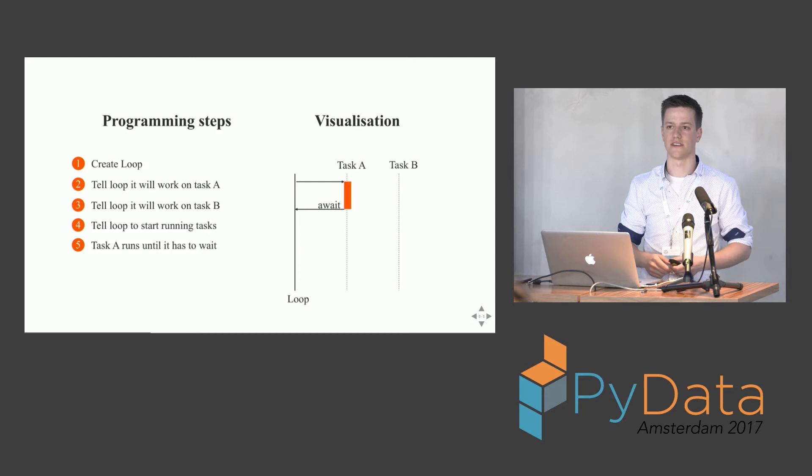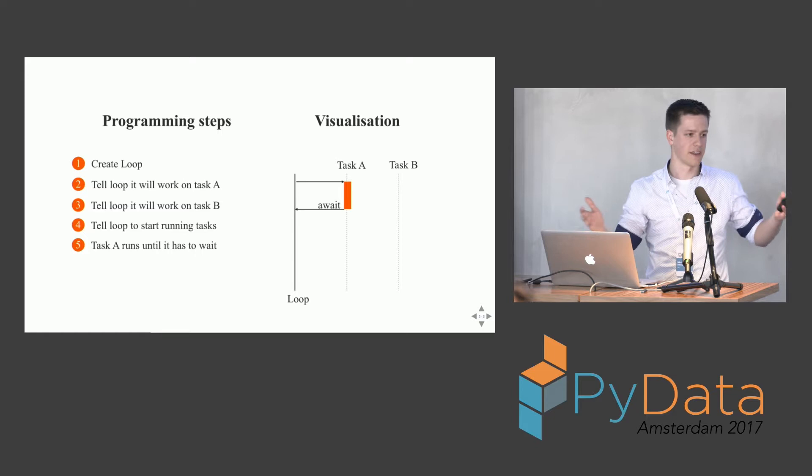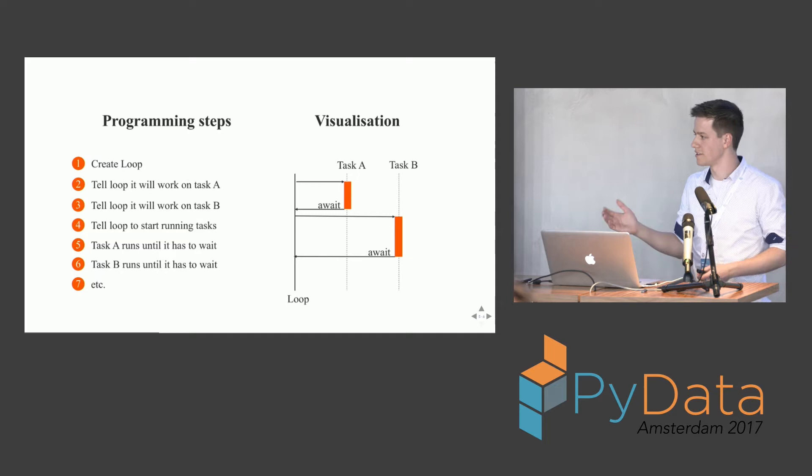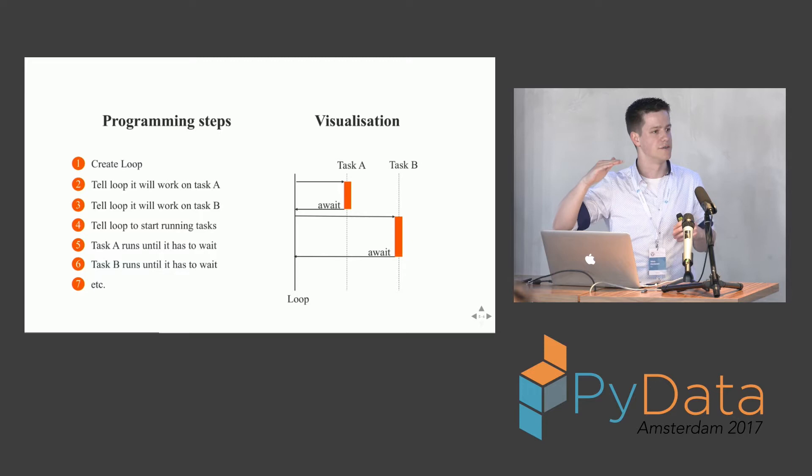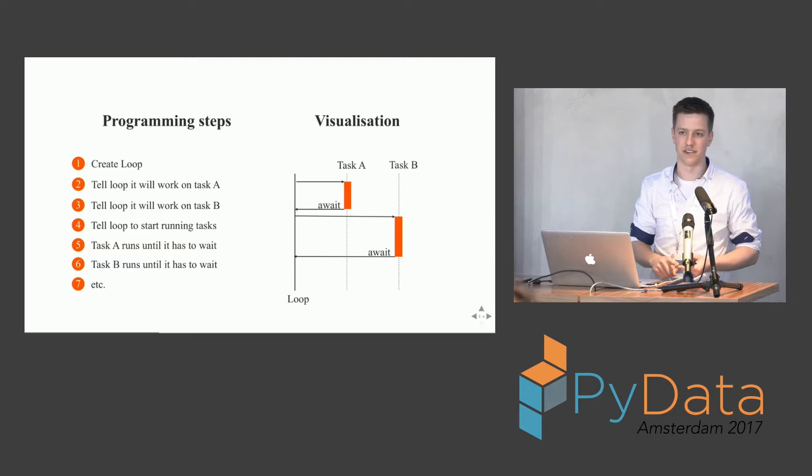The loop gets back this await statement and says the next task can start executing, giving control to task B. Task B will do exactly the same — receive a new message, and whenever it hits a database call or any form of IO, it gives back control to the loop again. This process goes on infinitely or as long as you specify the loop to run; you can tell the loop to finish whenever you like.